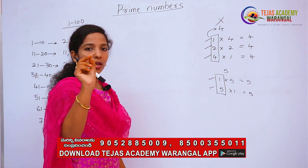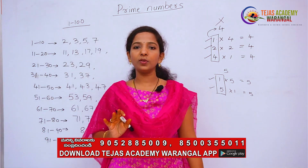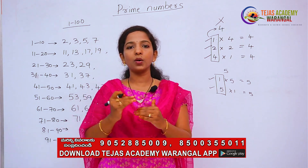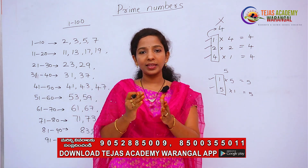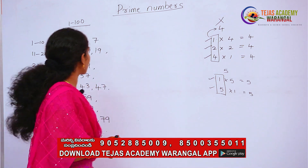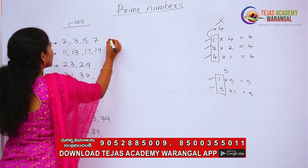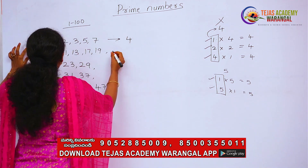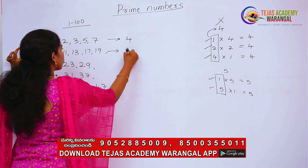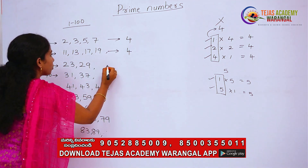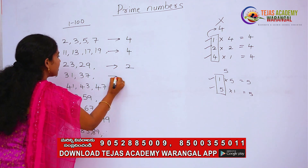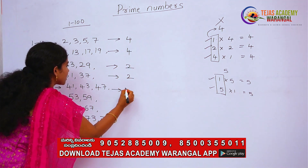I want to give you a trick — a pattern to remember. There are certain prime numbers ending in specific digits. So for the count of primes per decade: 1 to 10 gives 4, 11 to 20 gives 4, 21 to 30 gives 2, 31 to 40 gives 2, 41 to 50 gives 3.